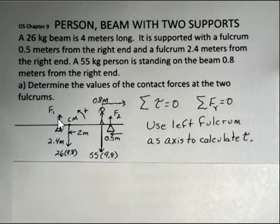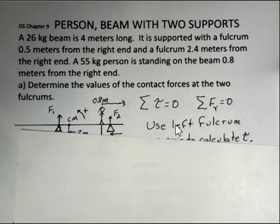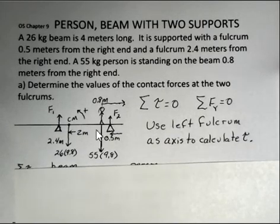If we try just to solve this with sum of the forces in the y direction equals 0, if we start that way, we'll quickly realize we have a problem. F1 plus F2 does equal the sum of the two weights. But that's one equation and two unknowns. So we're going to need to make use of the torque equation.